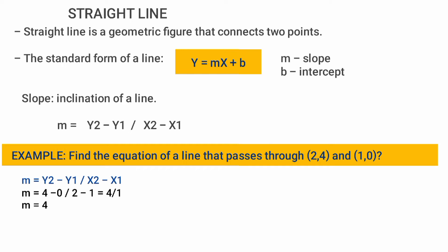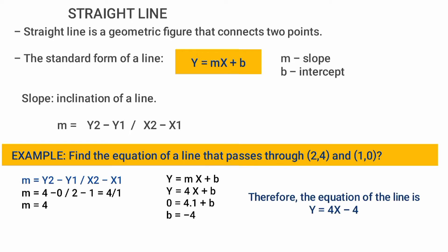Now going to the standard form of a line: Y is equal to Mx plus B. Y is equal to 4x plus B. Substituting the point (1, 0): 0 equals 4 times 1 plus B, so B equals negative 40. The equation of the line is Y equal to 4x minus 40.